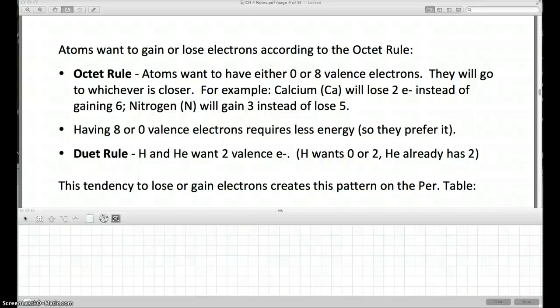Okay, so this is part two of the chapter four notes. We just finished talking about the octet rule and the octet rule says the atoms want zero or eight valence electrons and they will gain or lose electrons so they can get zero or eight. The exception there is a duet rule for helium and hydrogen. Those two want zero or two, that's why I call it duet rule versus the octet rule.